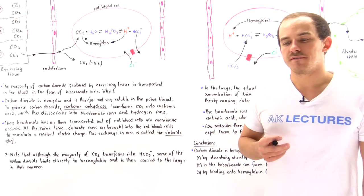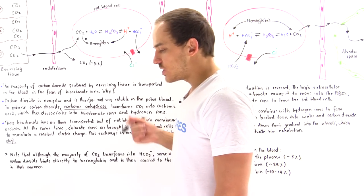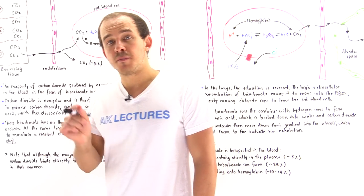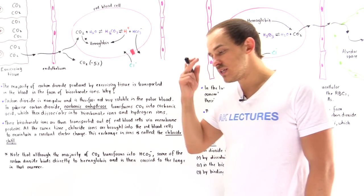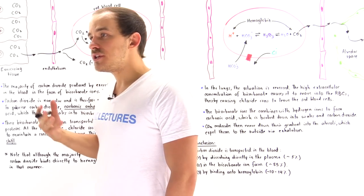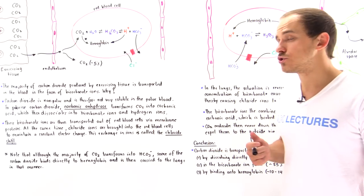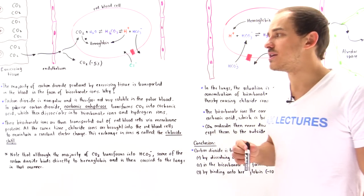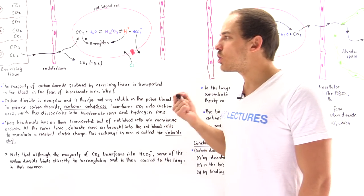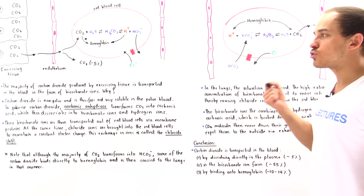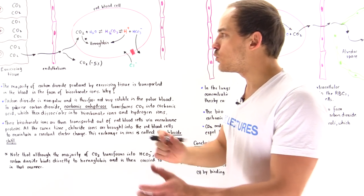Previously we discussed the Bohr Effect — a phenomenon by which hydrogen ions and carbon dioxide molecules bind onto special allosteric sites on hemoglobin and decrease hemoglobin's affinity for oxygen. This allows hemoglobin to deliver many more oxygen molecules to the exercising tissue and cells of our body. In this lecture, we'll discuss how carbon dioxide is actually transported inside our cardiovascular system from the tissue to the lungs.